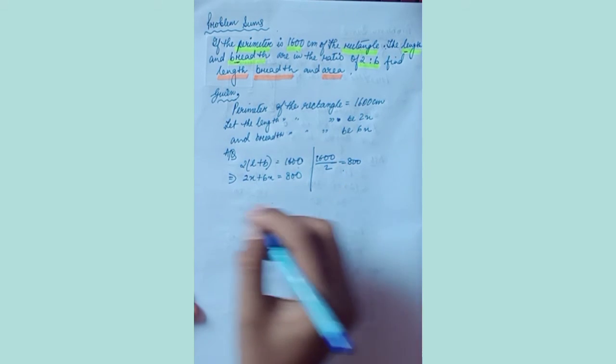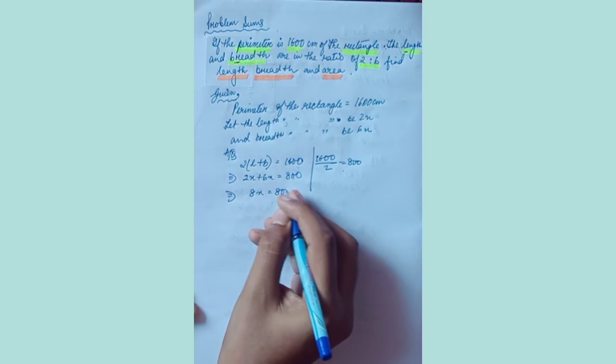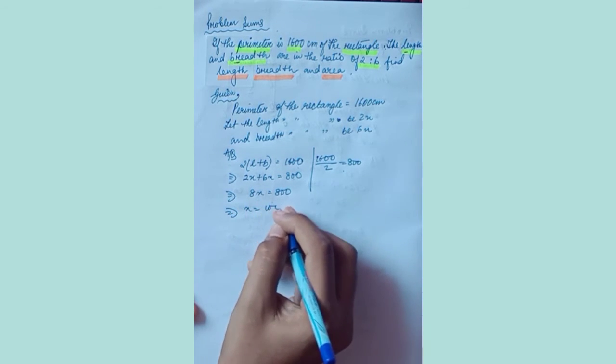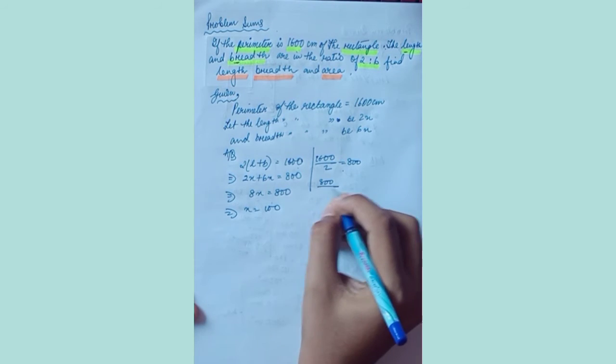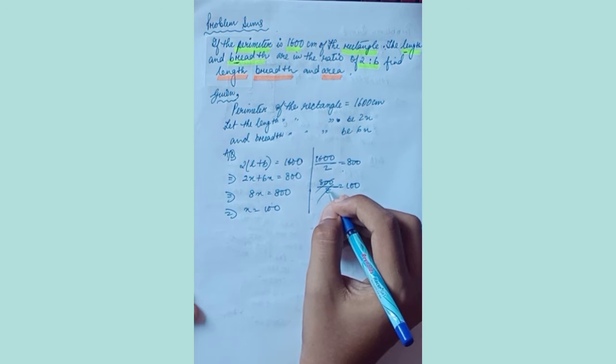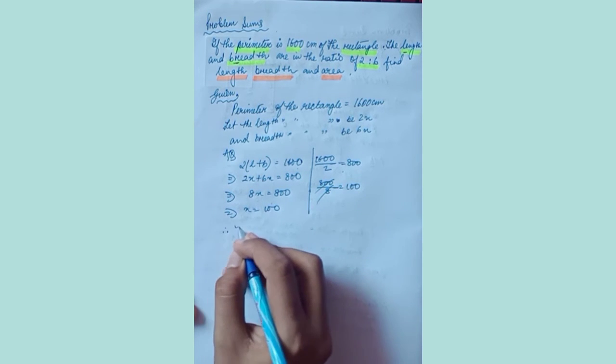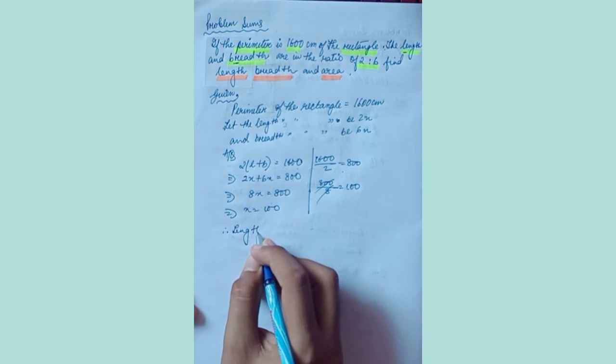Now this will give you 8x equals to 800. x equals to 100, because 800 divided by 8 will give you 100. Therefore you can write...